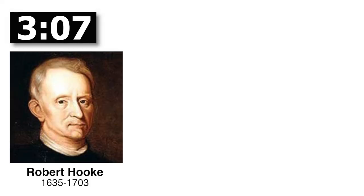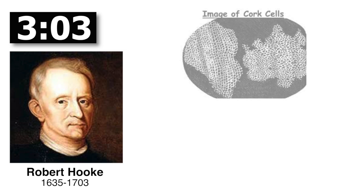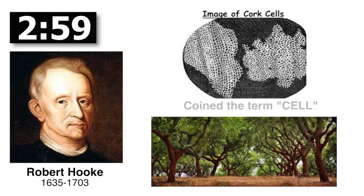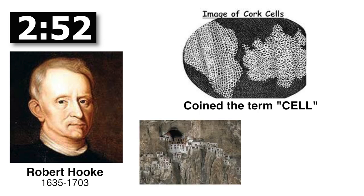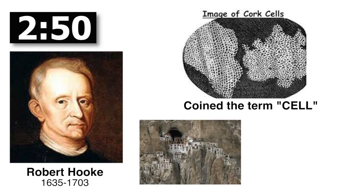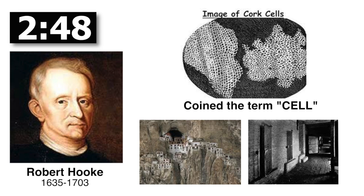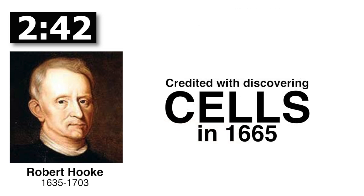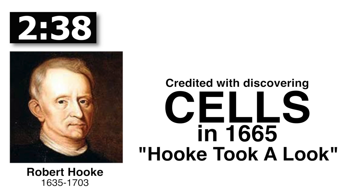Another early scientist, Robert Hooke, an Englishman, observed dead cork cells from the bark of a cork tree. He coined the term "cell" that we use today to describe the images of the dead plant cell walls, which appeared to him like the cells where monks lived in monasteries or where prisoners lived in rooms if roofs were taken off of buildings. Robert Hooke is most credited with his discovery of cells. One sure way to remember his name as you prepare for your exam is: Hooke took a look.